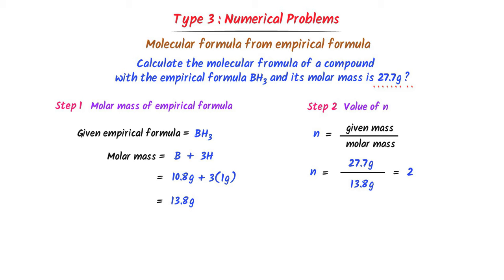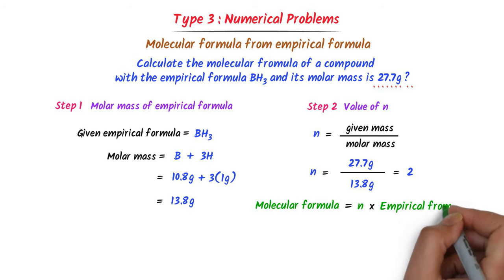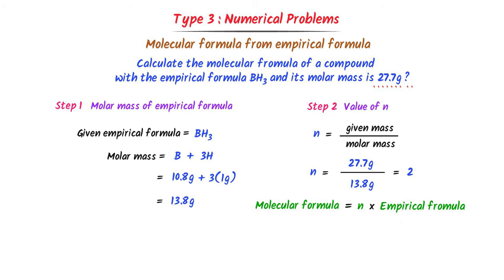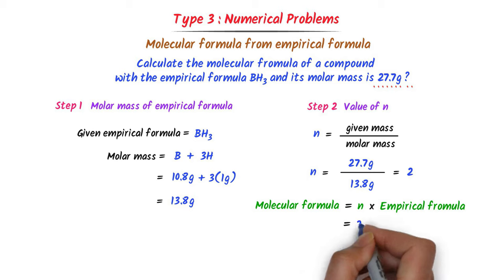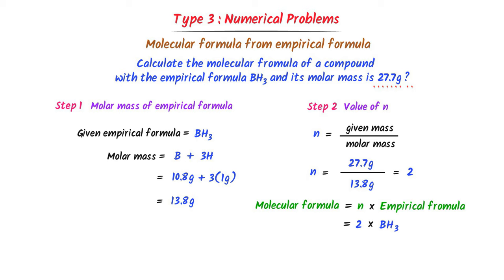We already learned that molecular formula equals N times the empirical formula. With N = 2 and the empirical formula BH3, I multiply all subscripts by 2 to get B2H6. Hence the molecular formula of this compound is B2H6.